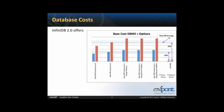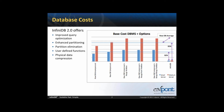Now let's look at database costs. Everyone gets discounts and pays different prices, but for an apples-to-apples comparison assuming like discounts, InfiniDB delivers improved query optimization, enhanced built-in partitioning with automatic intelligent partition elimination, user-defined functions, and robust physical data compression. When comparing to a typical row-based database, the savings are at least 90%. Once you apply your respective vendor discounts, I would think the same typical ranges would hold, so you can rely on these figures.